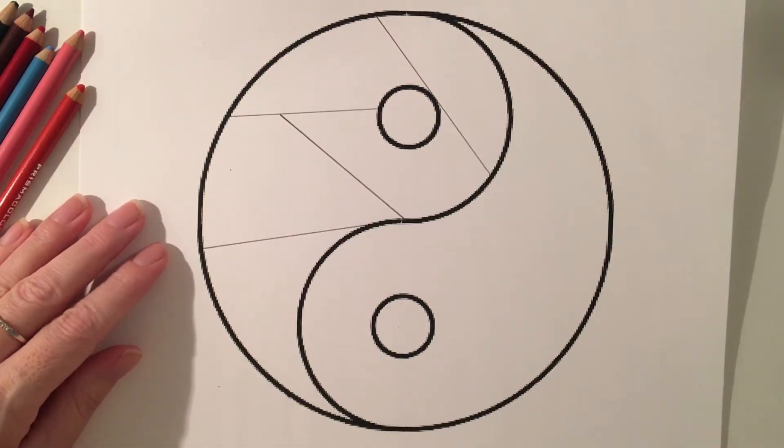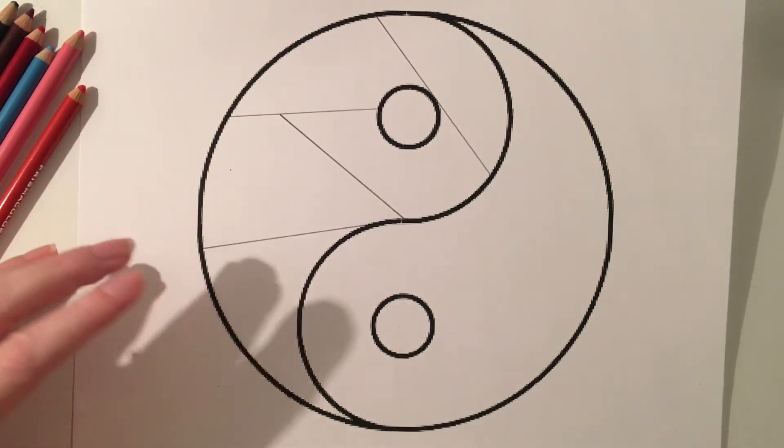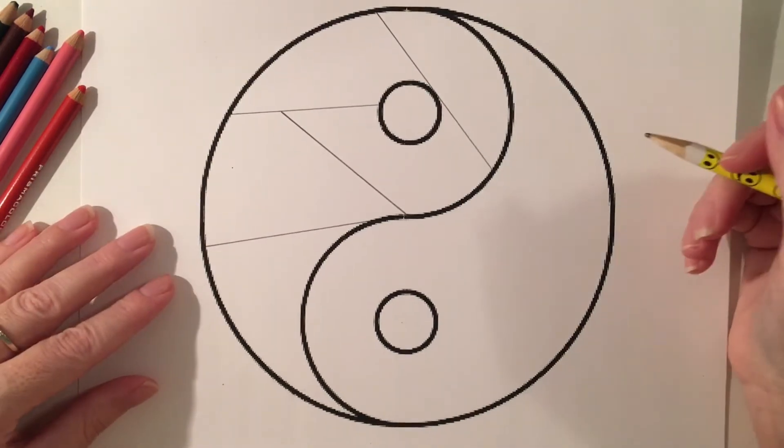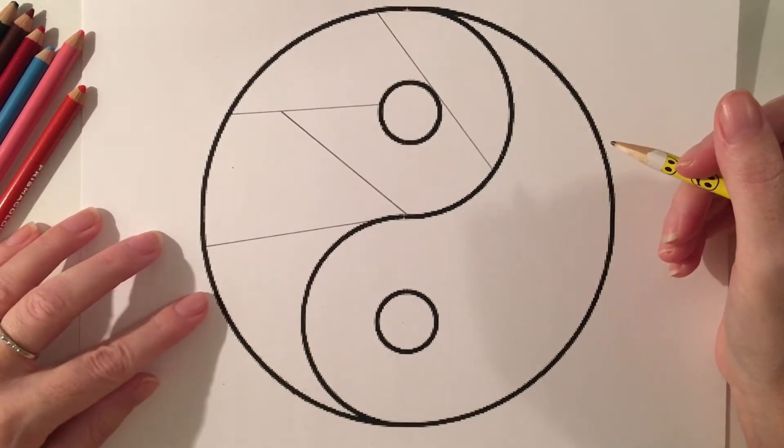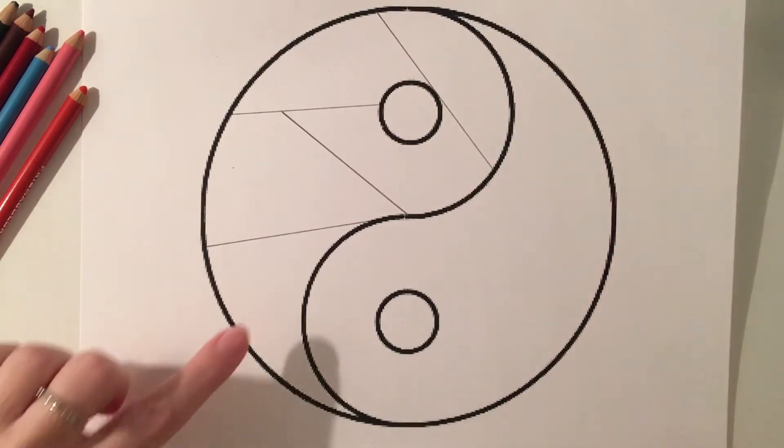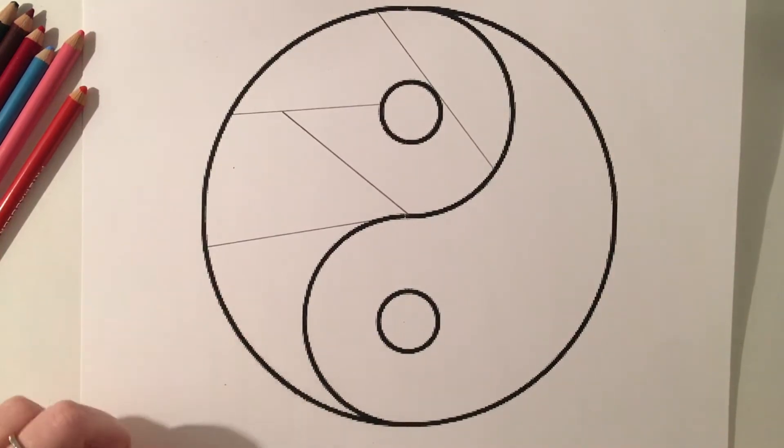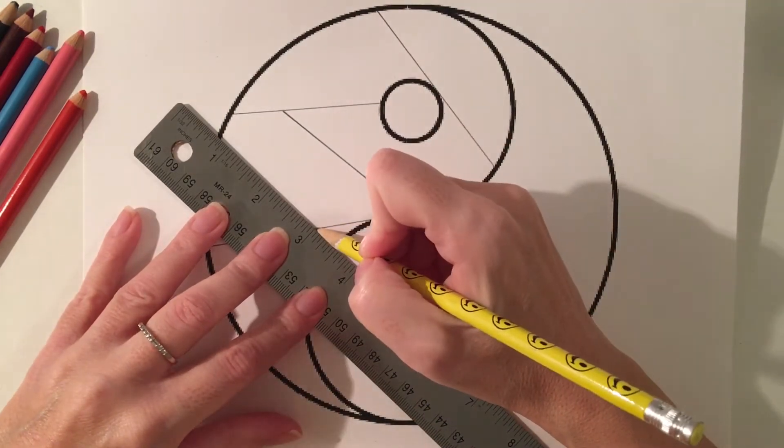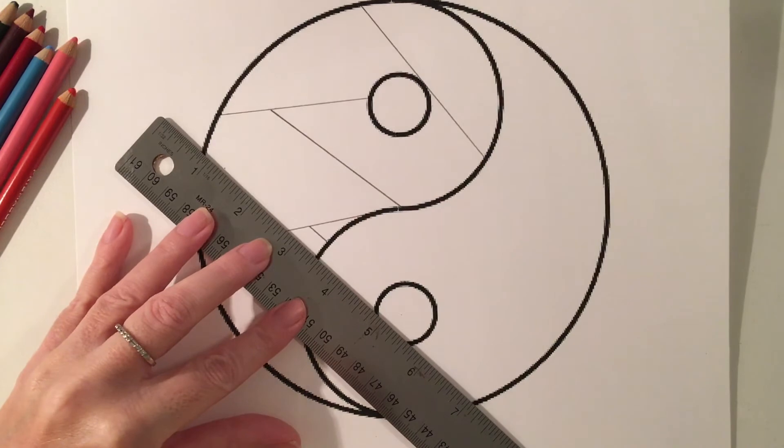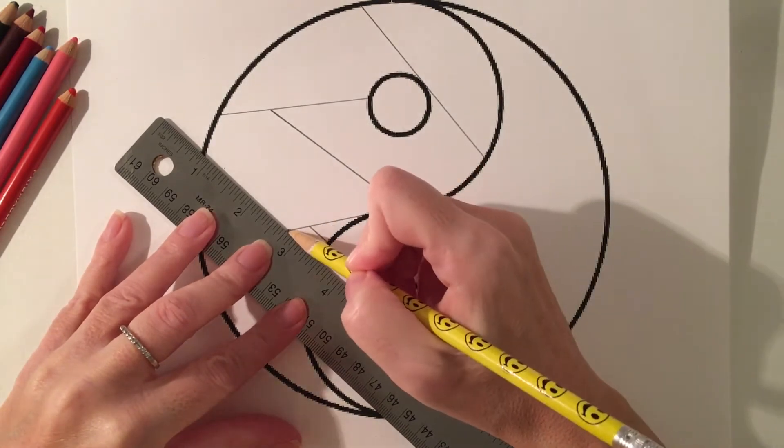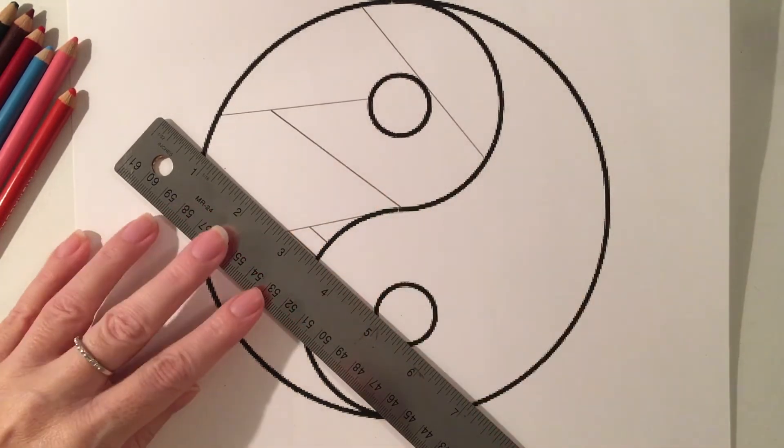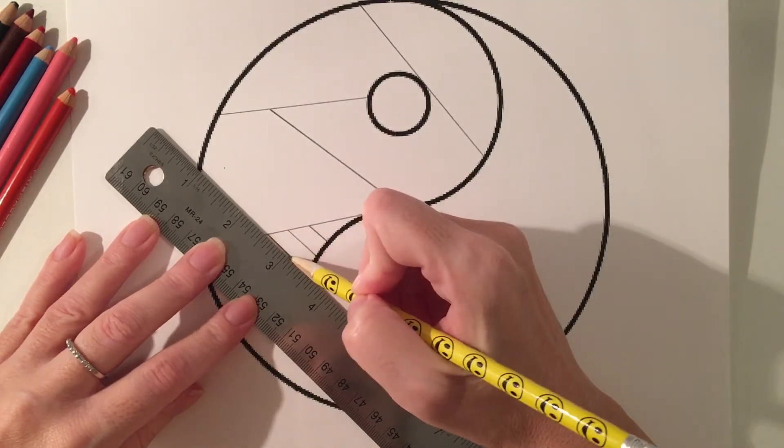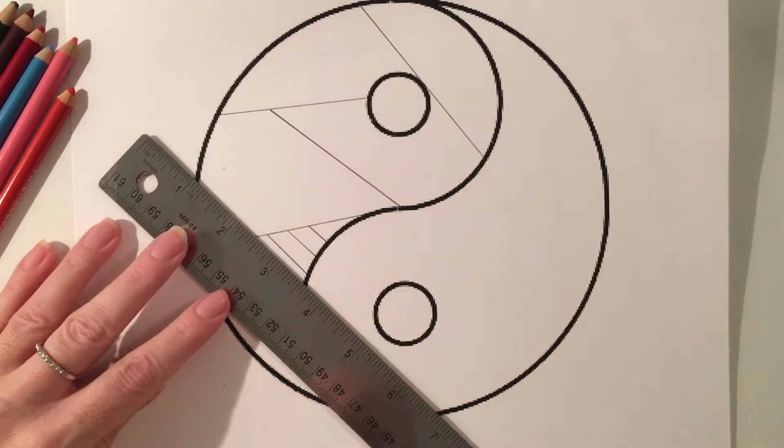For me I'm going to use a combination of organic shapes, geometric shapes, and different types of lines to fill in. So I'm going to go ahead and start in this section here. This section I think I'm going to do a grid pattern first. So since a grid pattern requires straight lines it's really important that I use my ruler to do this part of the zentangle.